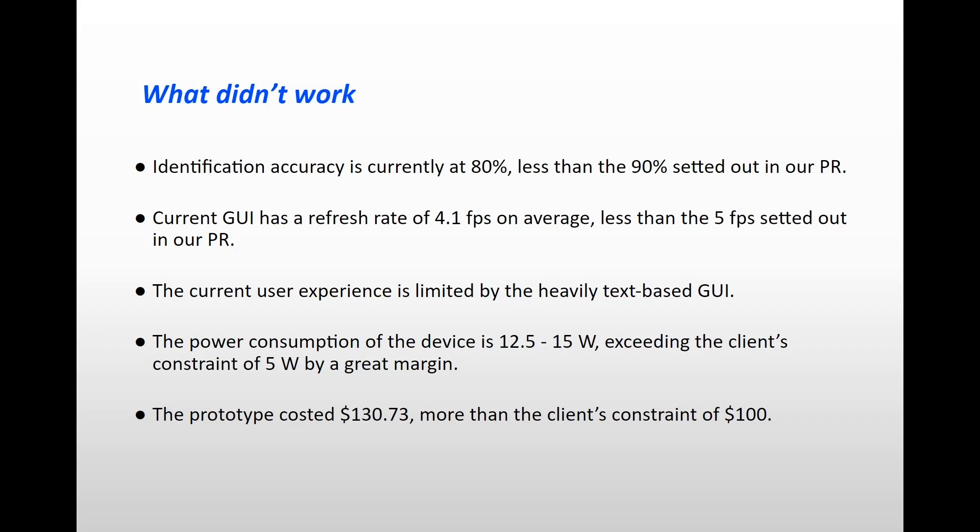Second, the current GUI could only achieve on average 4.1 frames per second in terms of video streaming and displaying the detection results, which is lower than our performance requirement of at least 5 frames per second. This is likely due to our use of Python, which is a high-level programming language that gives us very little control over its memory access and peripheral IOs.